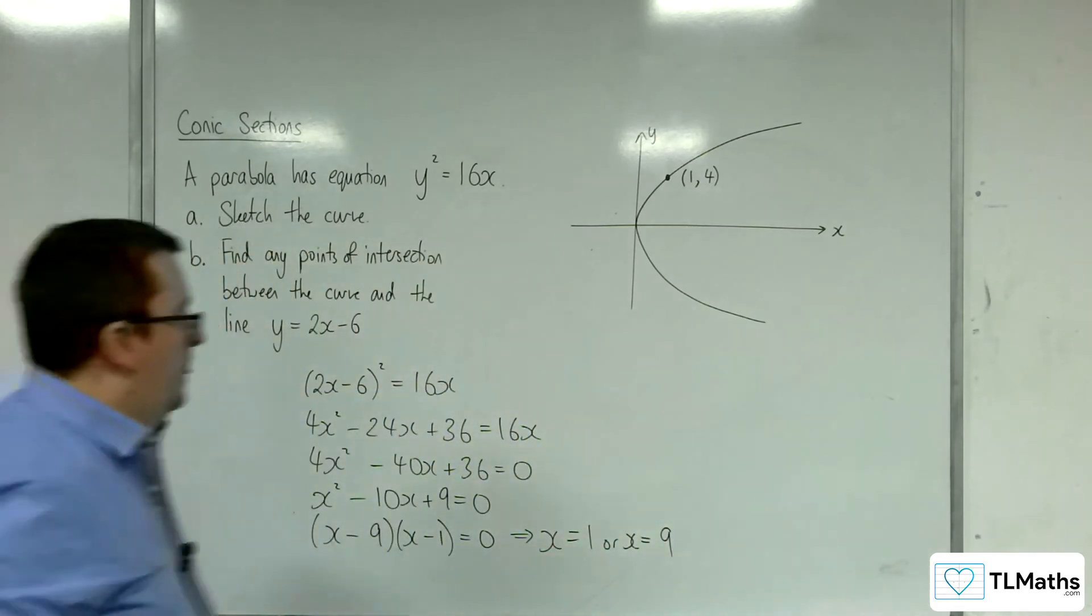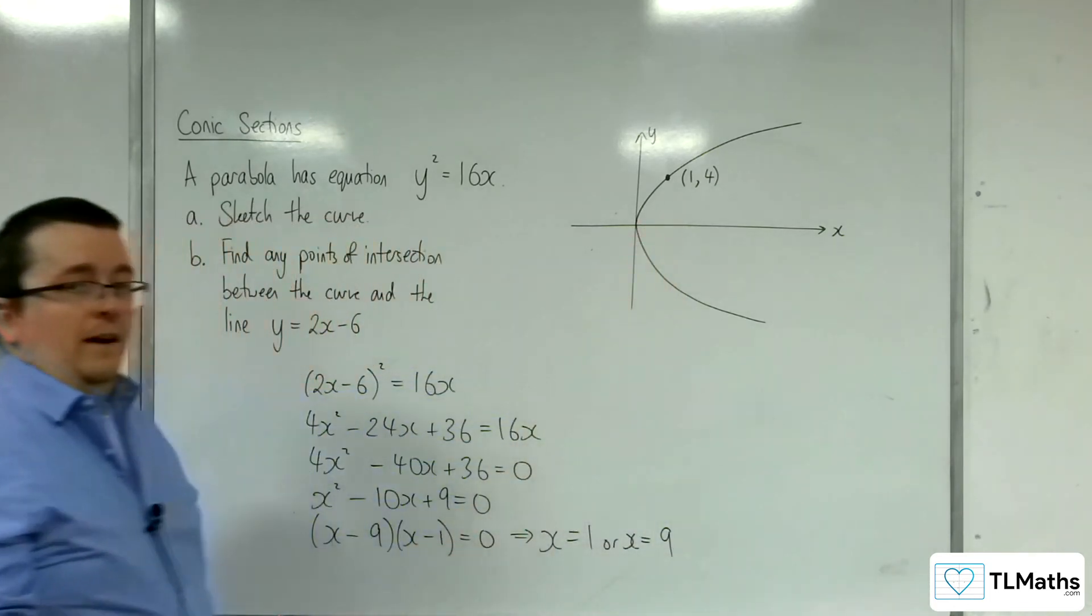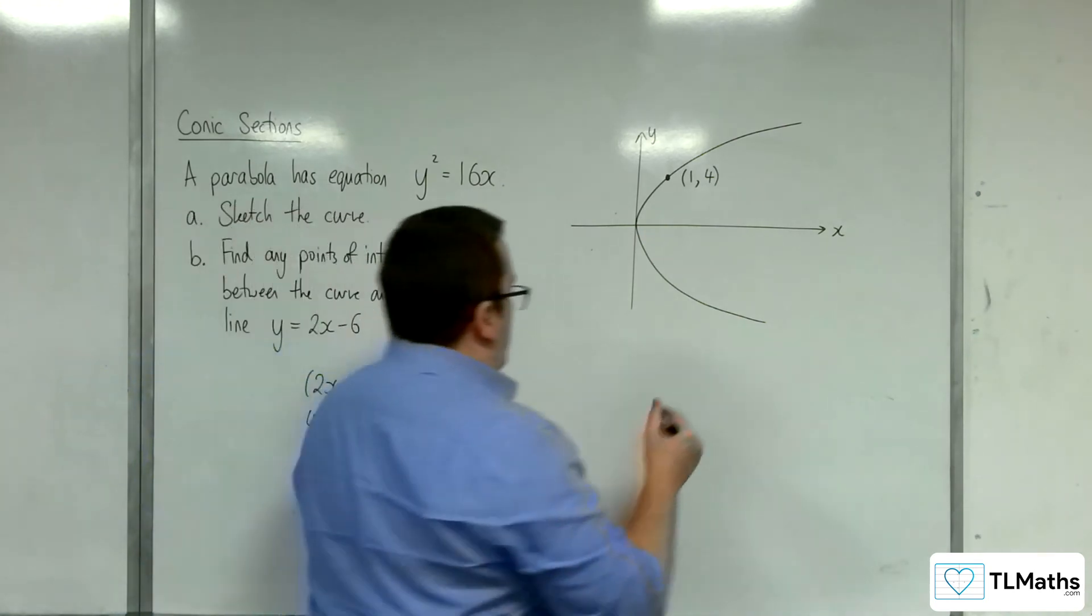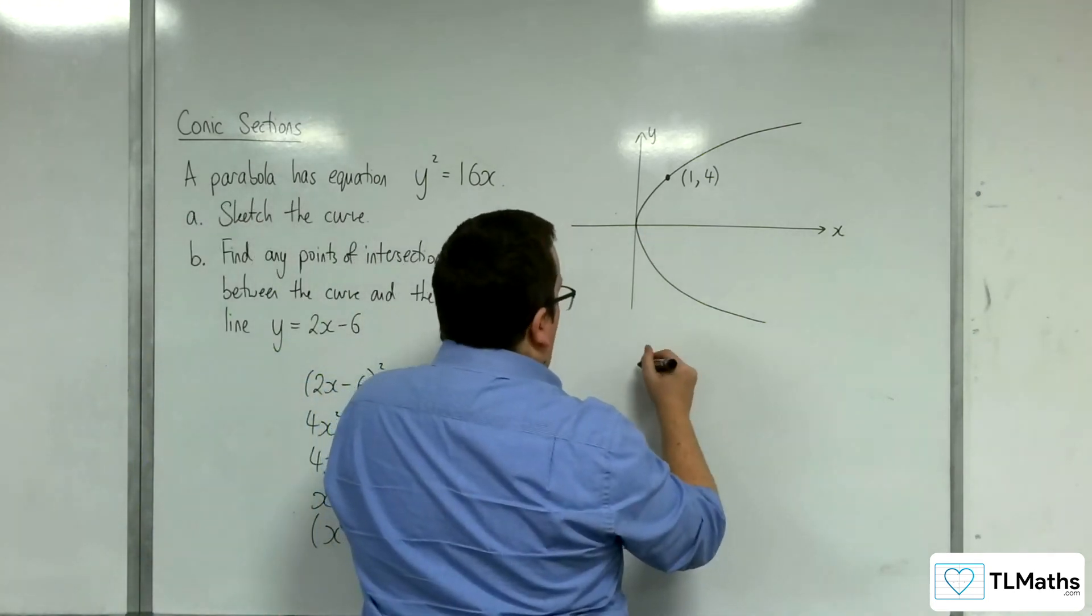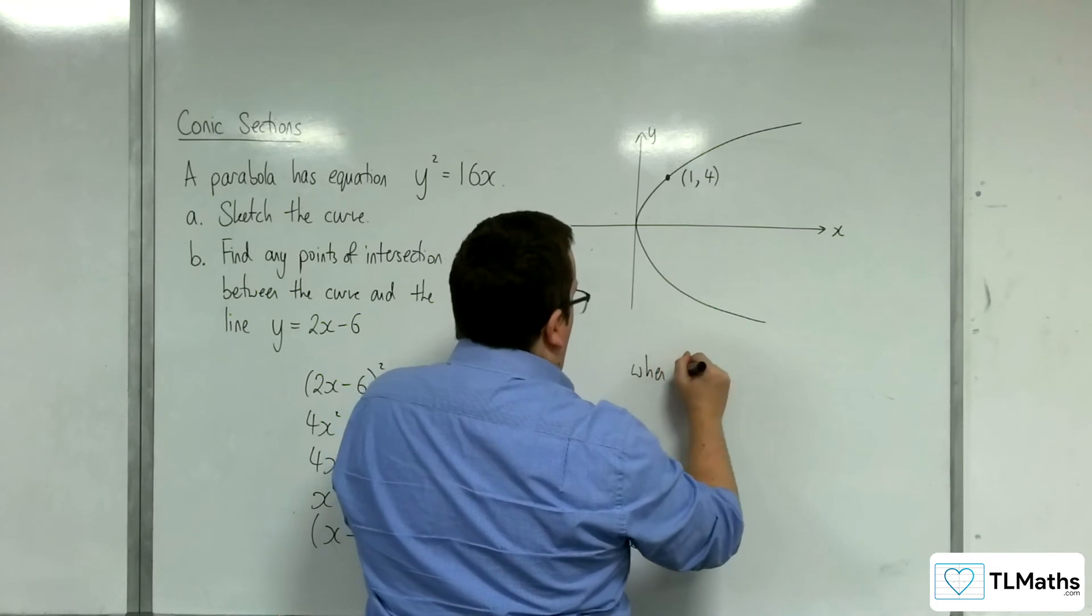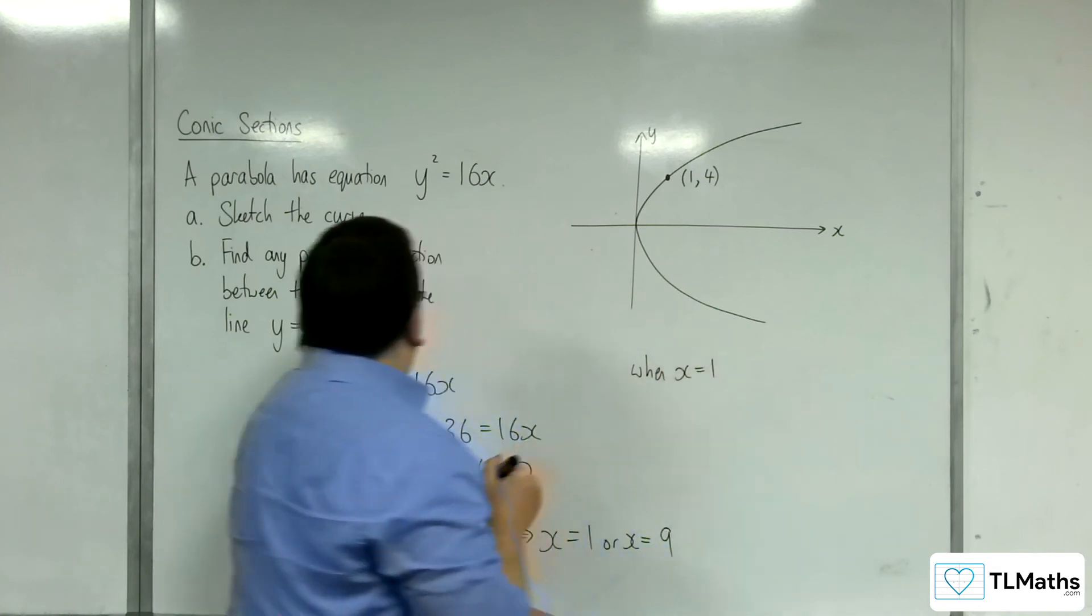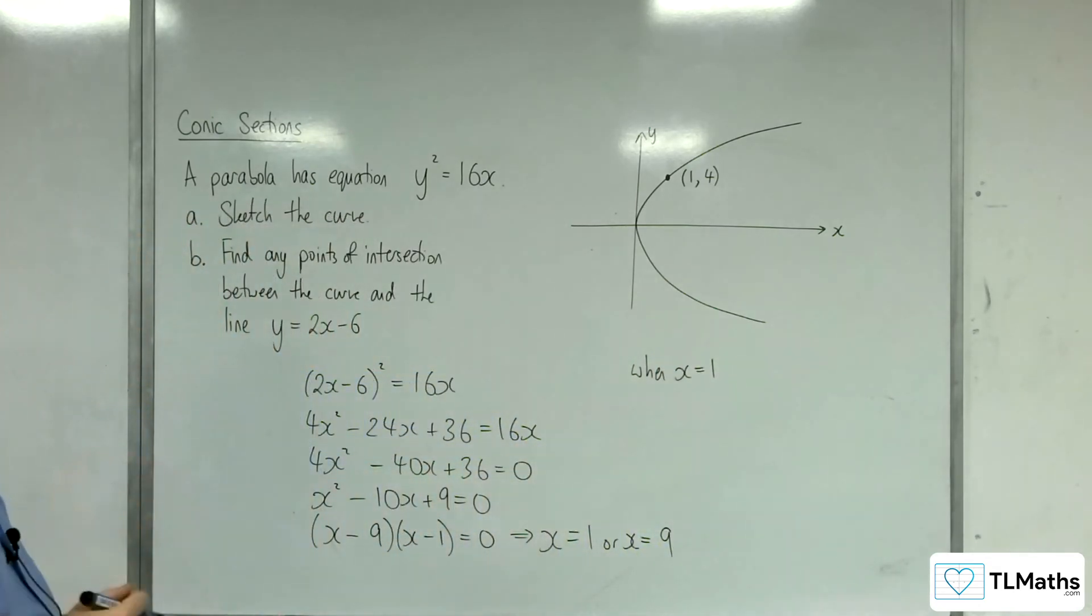So 2 points of intersection. So conveniently, I've just found one, haven't I? So when x equals 1. Oh no, actually I'm finding the other one, aren't I?